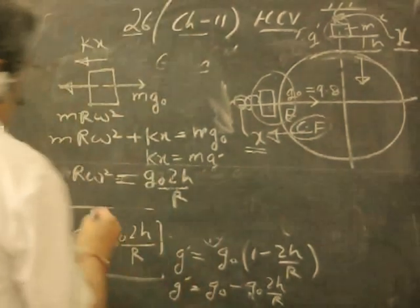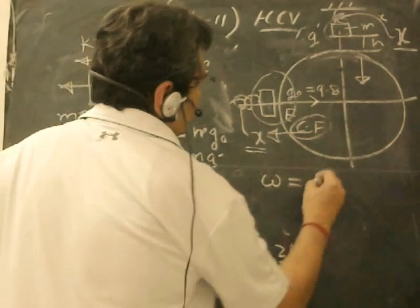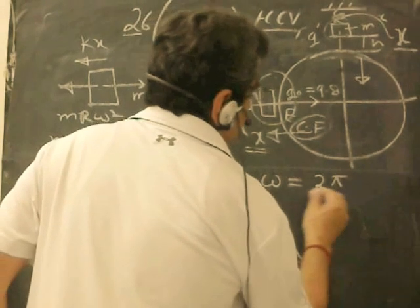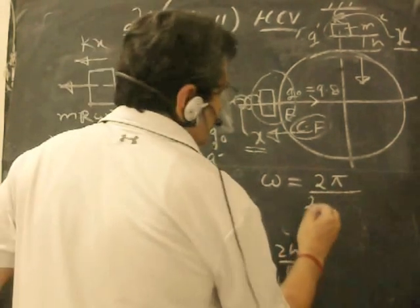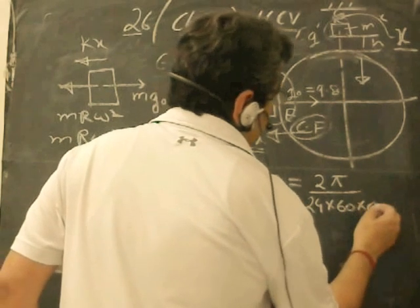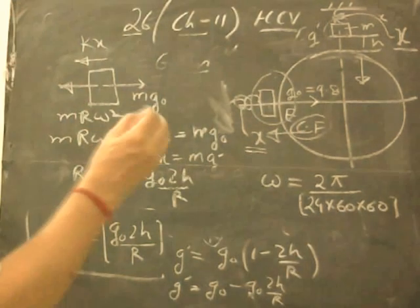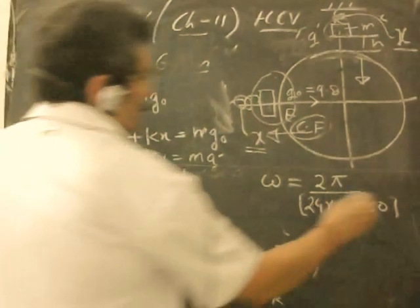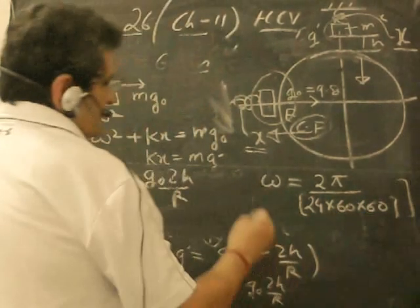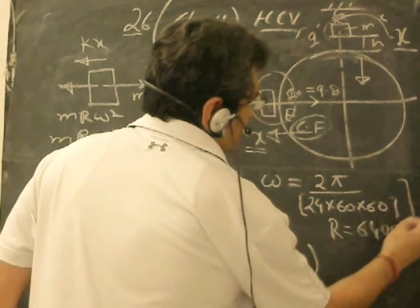Place the values. Omega is how much? Omega is 2π divided by T. T will be 24 hours × 60 minutes × 60 seconds. By this we know omega. We know the value of R is 6400 kilometers.